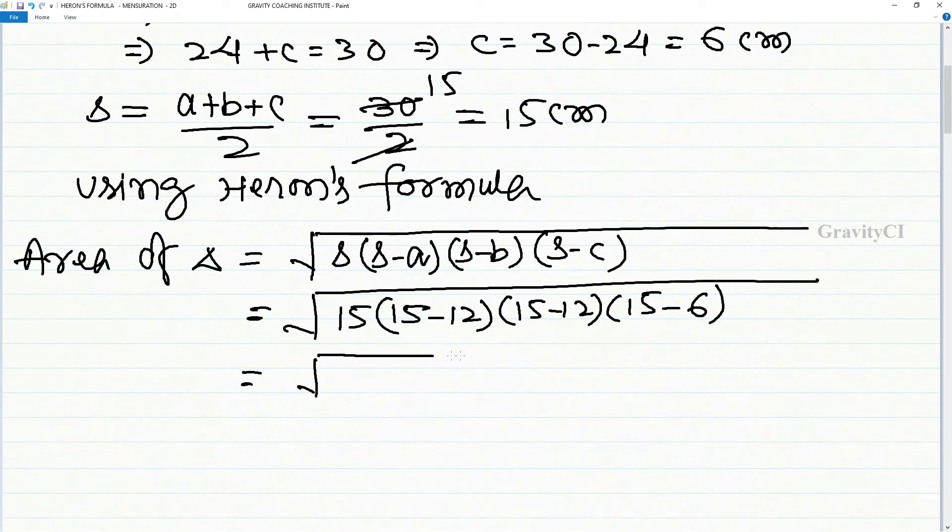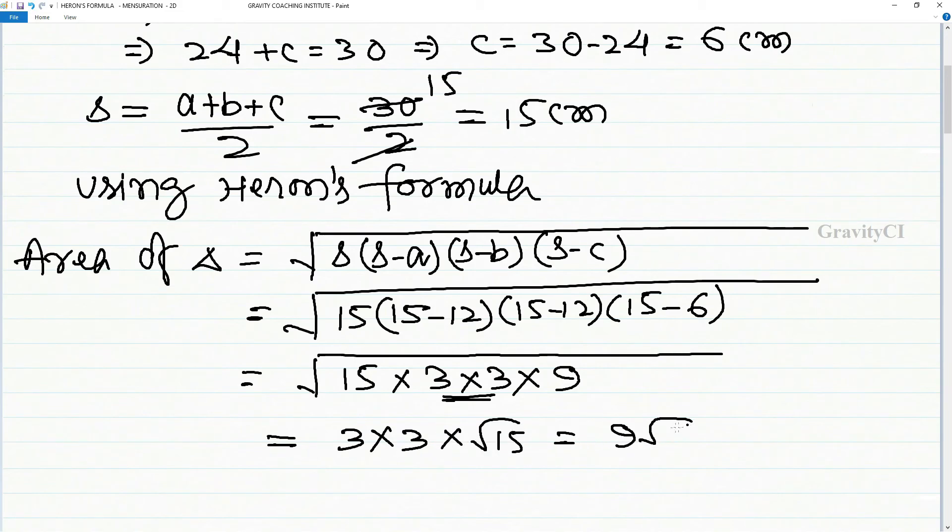Equal to under root 15 into 3 into 3 into 9. Equal to 3 into 3 into root 15, which equals 9 root 15 centimeter square. Answer.